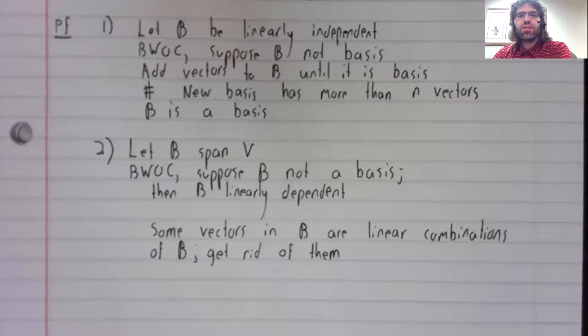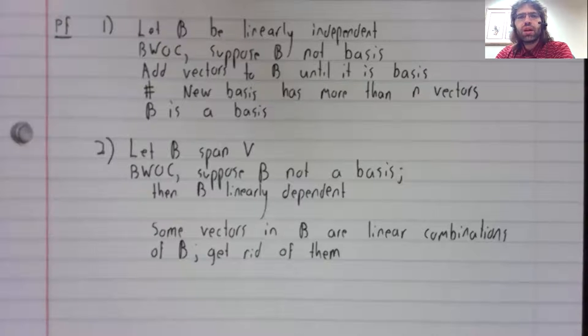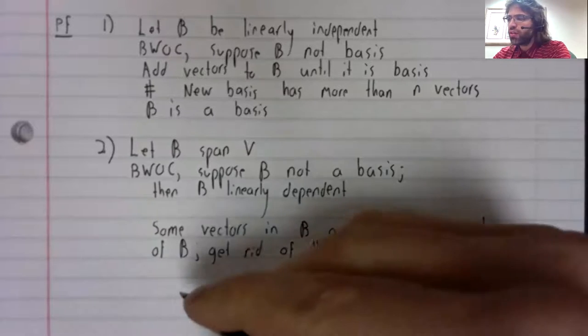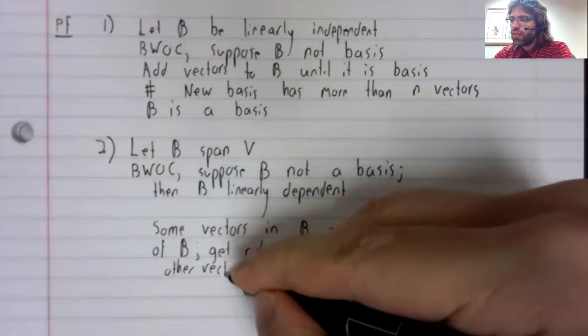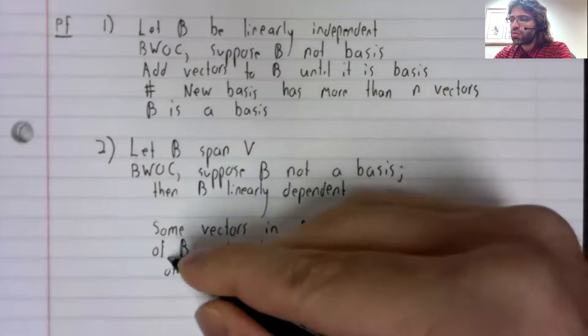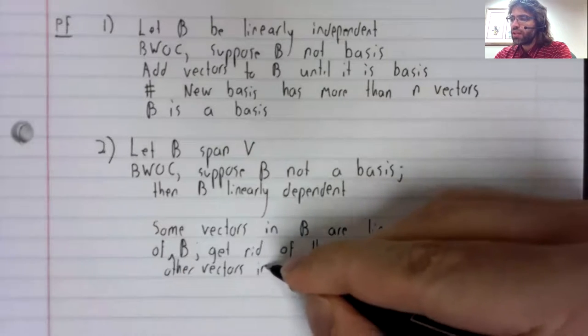Citing some previous theorems, if B is linearly dependent, that means some vectors in B are linear combinations of other vectors in B.